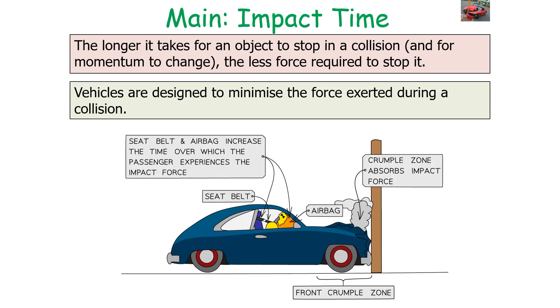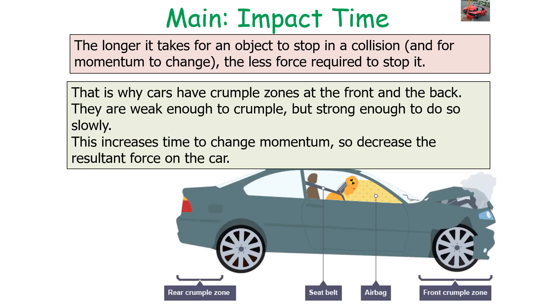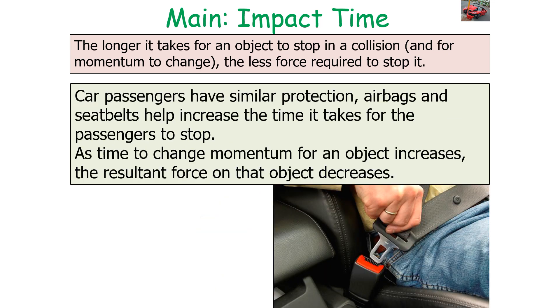So vehicles are designed to minimize the forces exerted on them during a collision with various different features, things like seatbelts, airbags, and crumple zones. It's why cars have crumple zones at the front and back, because these parts of the car are weak enough to crumple but strong enough to do so slowly. This increases the time taken to change momentum, so it decreases the resulting force on the car. Car passengers have similar protection because airbags and seatbelts help increase the time it takes for the passengers to stop. So as the time to change momentum for an object increases, the resulting force on that object decreases.